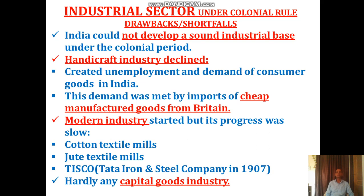The demand for consumer goods was met by imports of cheap manufactured goods from Britain. They systematically deindustrialized the handicraft industry in India because these industries consumed raw material. So they deindustrialized those industries — the handicraft industries were declined — and the raw material was exported to industries in Britain. The policy of declining the handicraft industry created unemployment and a shortage of consumer goods in India, and this shortage was met by cheap manufactured goods from Britain.